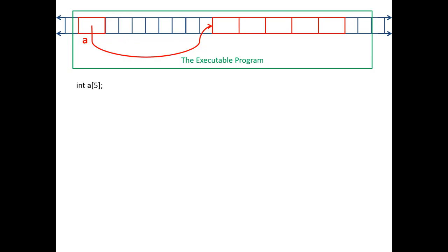If you get out of the limit of your program — if you actually go to a[5] equals 2, which means you're setting the element past the end — and by mistake you say a[5] equals something, you're going one out of bounds. You're actually ruining your own executable and your program is going to crash.